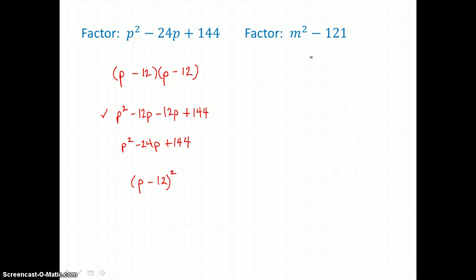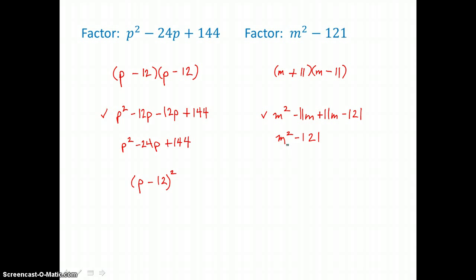The second example: m squared minus 121. Because it's the difference of two perfect squares, the square root of m squared is m, and the square root of 121 is 11, so I can factor it into a binomial times a binomial — the sum and difference of the square roots of those two terms. Checking: m times m is m squared, m times negative 11 is negative 11m, but 11 times m is positive 11m. Positive 11 times negative 11 is negative 121. So my middle terms sum to zero — they're opposites — and I end up with the binomial m squared minus 121.